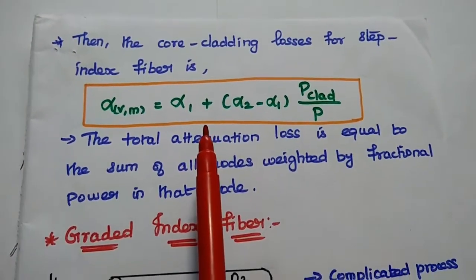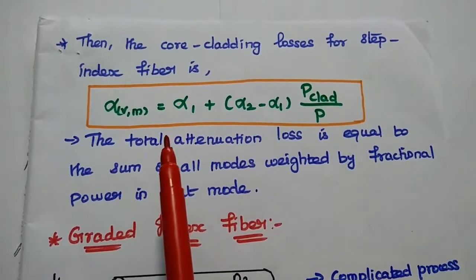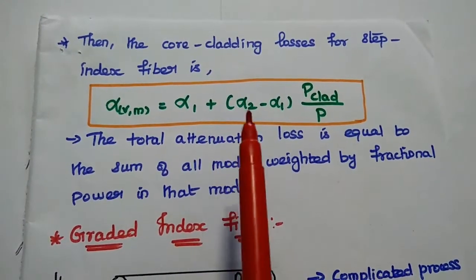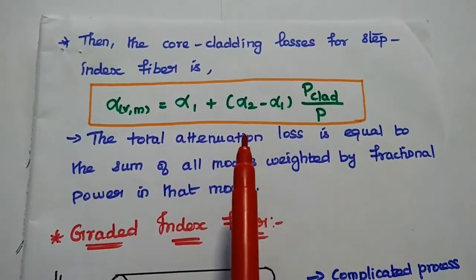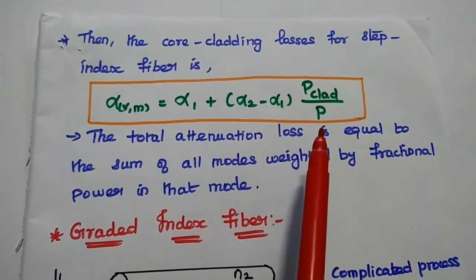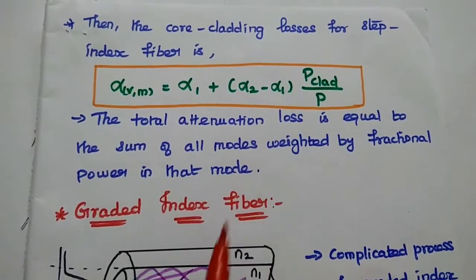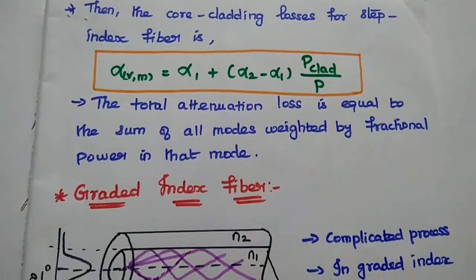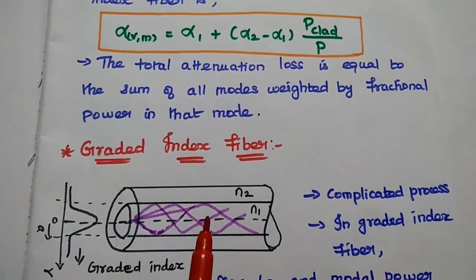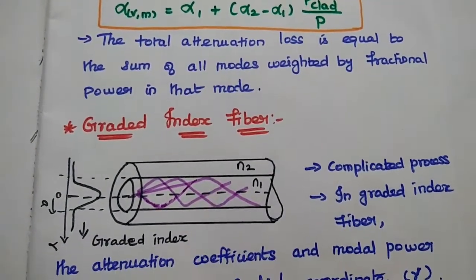From this expression, the total attenuation is equal to the sum of all modes weighted by the fractional power in that mode. This is the attenuation loss or core cladding loss for step index fiber.